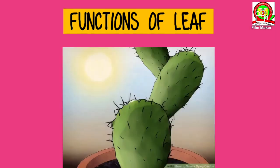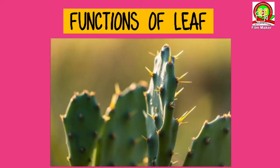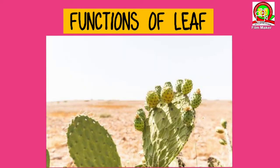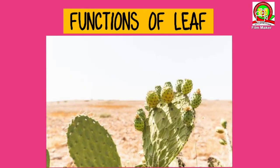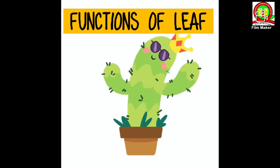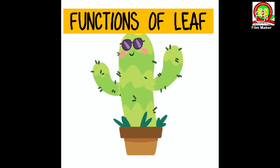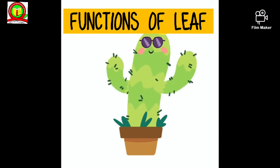The cactus plant grows in the desert. The leaves of the cactus plant are reduced into spines so that the plant does not lose water during transpiration. The spines also protect the plant from grazing animals. It is the green fleshy stem which makes the food in the case of cactus plants.